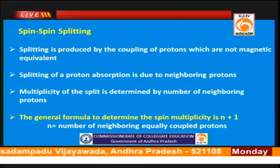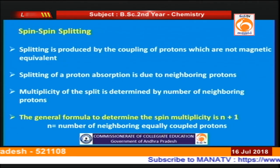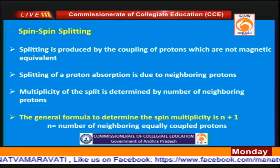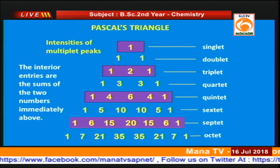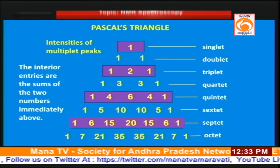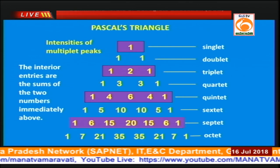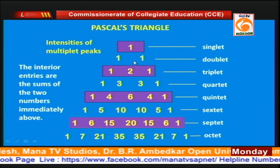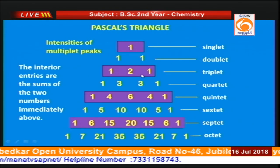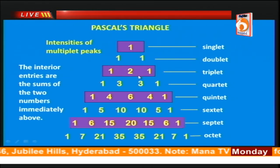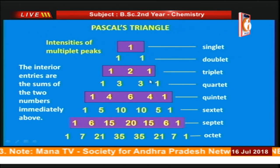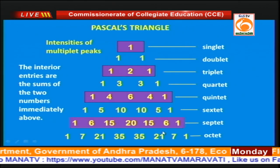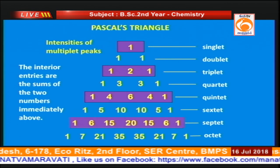Now let us consider the concept of spin-spin splitting. Spin-spin splitting occurs because of the coupling of one proton with another proton — it is a result of spin-spin coupling. The splitting depends on the number of neighboring protons and is given by the formula n + 1. We can use Pascal's triangle to explain the intensities of peaks in a multiplet. If there is only one proton, we get a singlet. When one proton couples with another proton, we get a doublet in the ratio 1:1. When one proton couples with two protons, we get a triplet. For three neighboring protons, n + 1 = 4, so we get a quartet with four lines in the ratio 1:3:3:1.